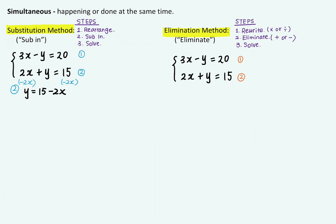And if I substitute this equation into the first equation, I can write 3x minus 15 minus 2x equals 20. Notice I put 15 minus 2x in the brackets because this is the expression that represents y.